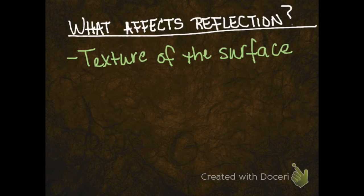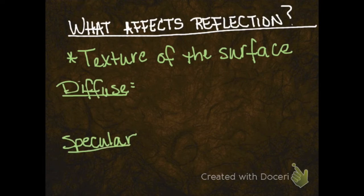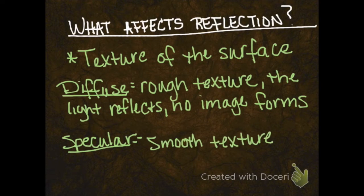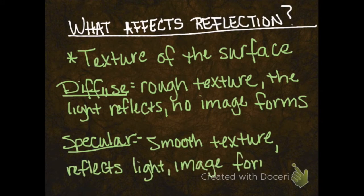The texture of the surface is going to affect how it reflects light. Because of the different textures of surfaces, we've got two different types of reflections: diffuse reflection or specular reflection. In a diffuse reflection, the light reflects but doesn't form an image because the texture is rough. Then you have specular, which has a smooth texture like shiny surfaces. This reflects the light in one direction, so you end up with an image.